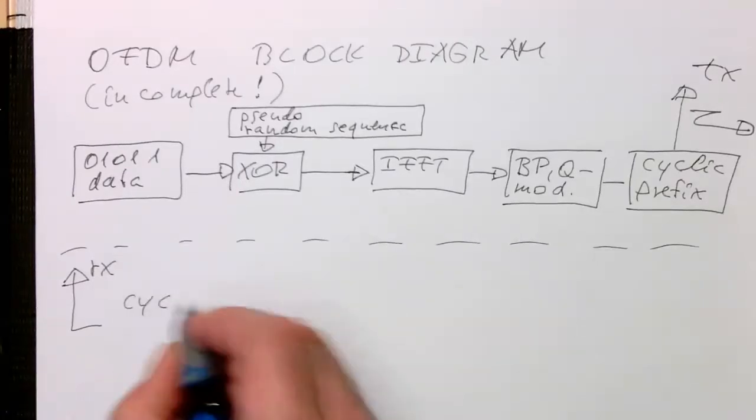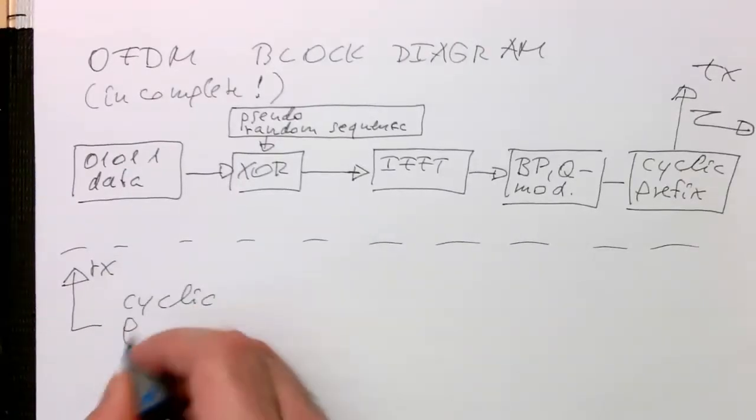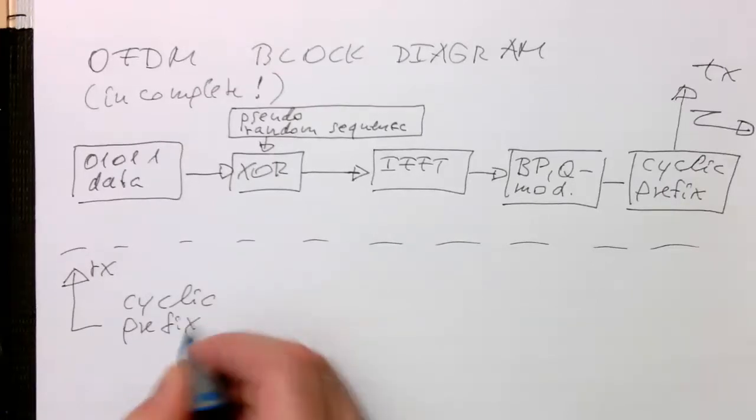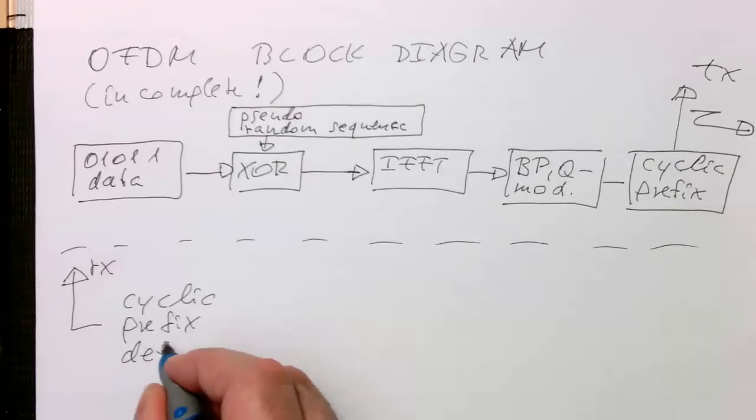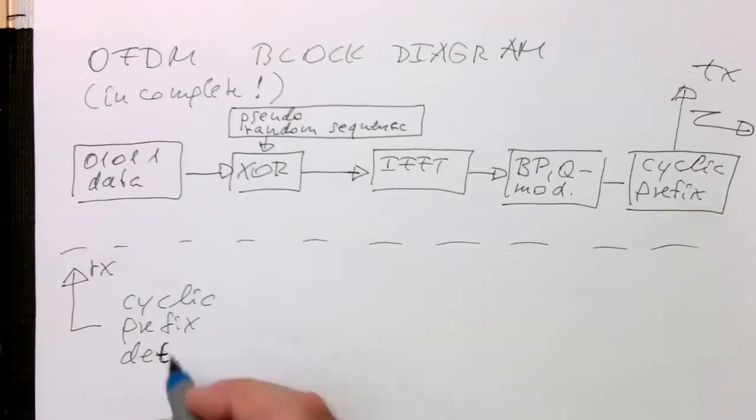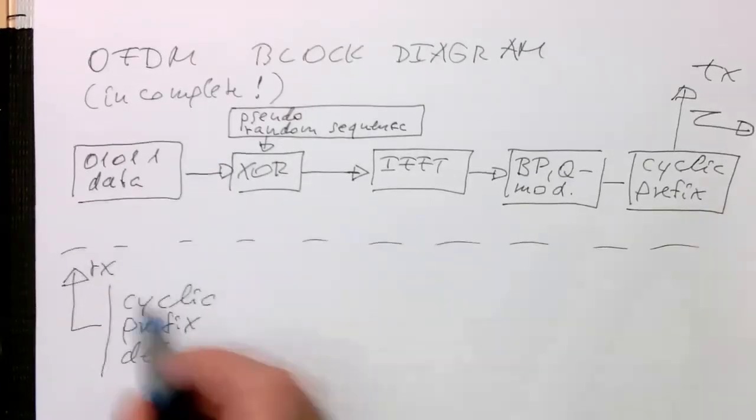So obviously now we have here as a first stage the cyclic prefix detection. That's the first step, we need to find the start of the symbol.